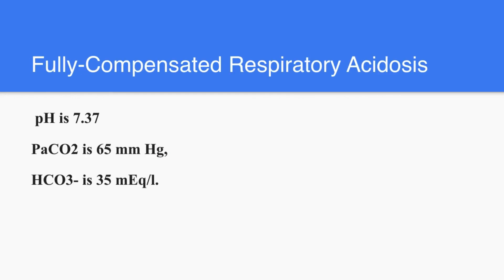What about this one? The pH is 7.37 — this is normal. The PaCO2 is high, and the bicarb is 35. This is more towards the acidic side because it's less than 7.4. So the basic problem was respiratory acidosis — and this is fully compensated respiratory acidosis. By this, we come to the end of our topic. I hope you made use of this. Please leave your comments if you are satisfied, if there are any more topics I should introduce, or any more complicated problems we have to discuss.